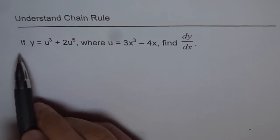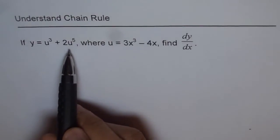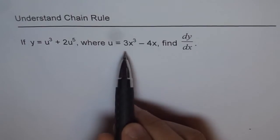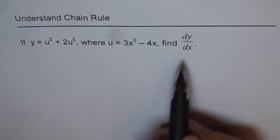We are given here a function y equals u cubed plus 2u to the power of 5, where u is equal to 3x cubed minus 4x, and we need to find dy by dx.